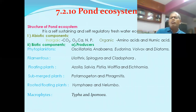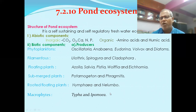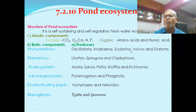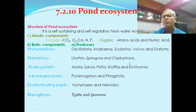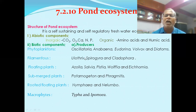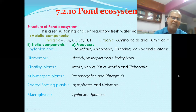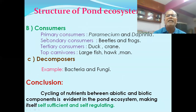Rooted floating plants, also known as attached floating hydrophytes, include Nymphaea and Nelumbo. Macrophytes, the amphibious hydrophytes, include Typha, Limnophila heterophylla, and Ipomoea. All these plants have the ability to perform photosynthesis and are known as producers. Producers convert solar energy into chemical energy, playing a vital role in every ecosystem.